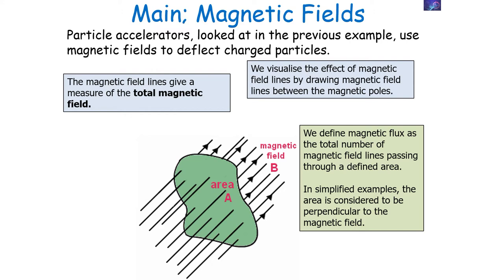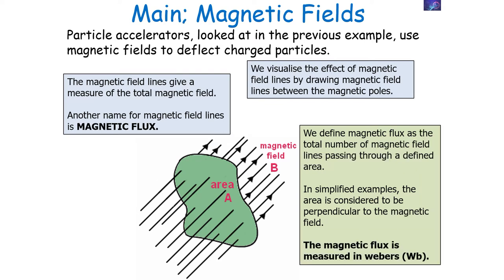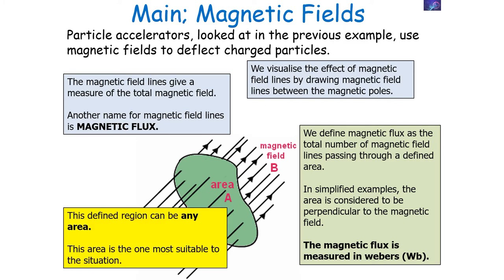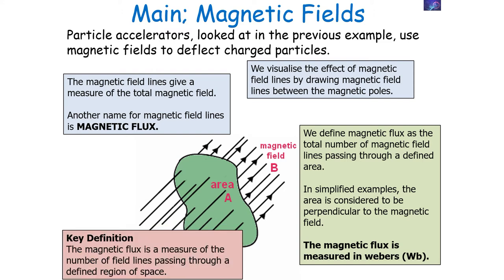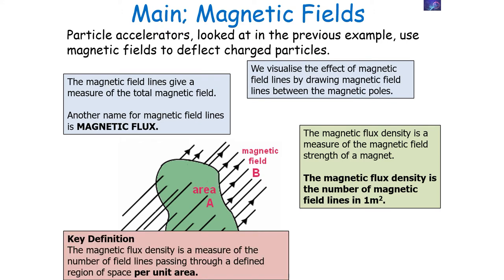In simplified examples the area is considered to be perpendicular to the magnetic field. We measure this idea in Webers or Wb. The defined region in our definition can be any area — it's the area most suitable to the situation you have been given. Our key definition is that magnetic flux is a measure of the total number of magnetic field lines passing through a defined region of space. Magnetic flux density is a measure of the magnetic field strength of a magnet — it is how many field lines there are in one metre squared. Magnetic flux density is a measure of the total number of field lines passing through a defined region of space per unit area.